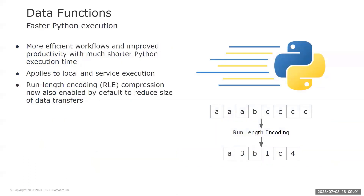Python-based data functions execution has been also significantly improved. We now have a much faster Python execution, which leads to more efficient workflows and improved productivity. Beyond that, we have also enabled run-length encoding, Rally compression, helping further to improve the speed and efficiency of the Python code execution. As you may remember, we introduced Rally compression for the R service in Spotfire 11.7. Rally compression works by reducing the size of the data transferred over the network, which reduces network latency and improves overall performance.